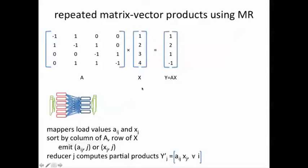When reducer j gets all its elements, it computes the partial product aij times xj. Since it's getting the values of aij for every j, it's also getting, for a bunch of j's, the xj's for a bunch of j's. It just multiplies them up for every i. In other words, the jth reducer will compute—say if j equals 1—will compute minus 1 times 1, 1 times 1, 0 times 1, 0 times 1, etc.